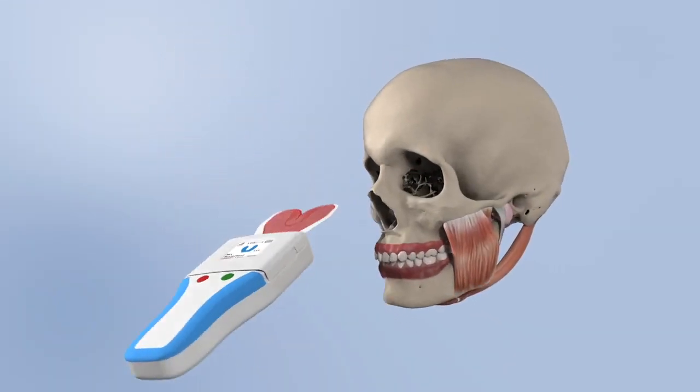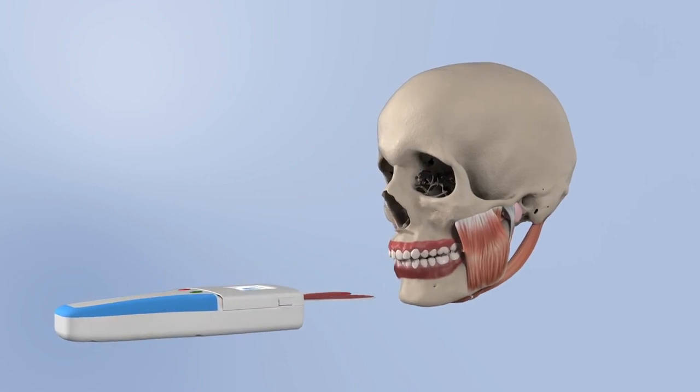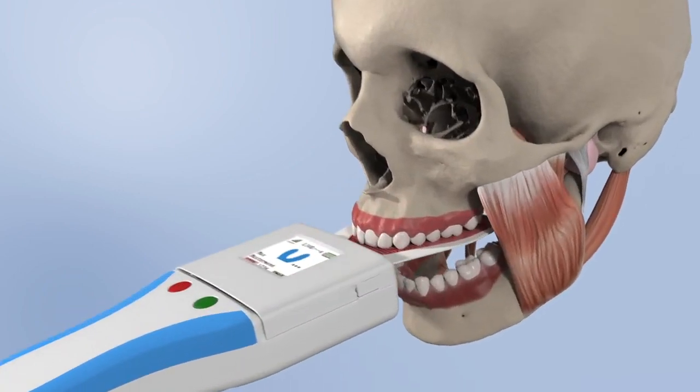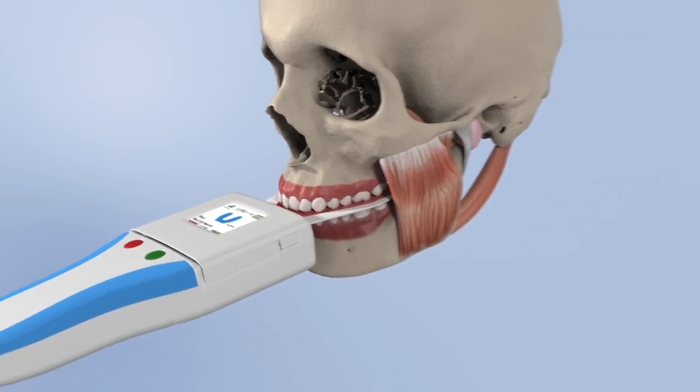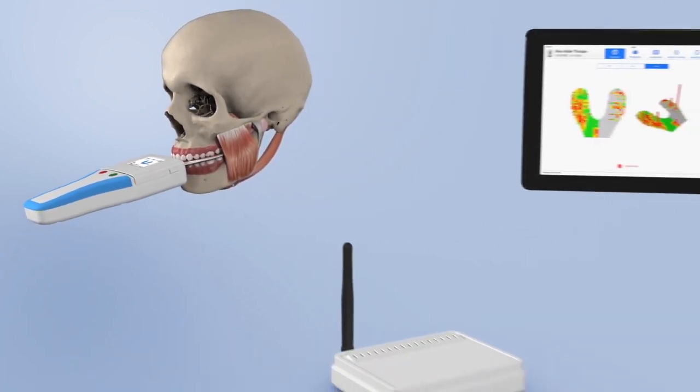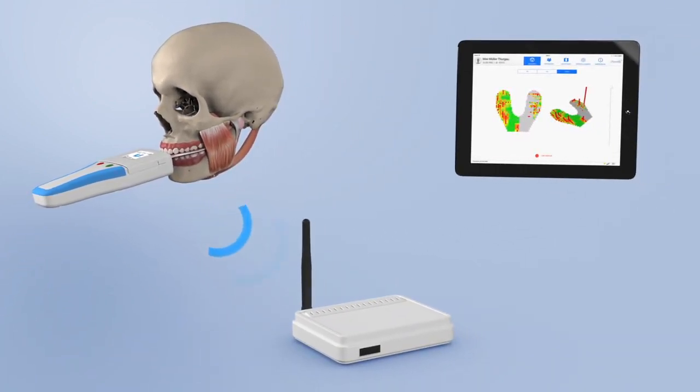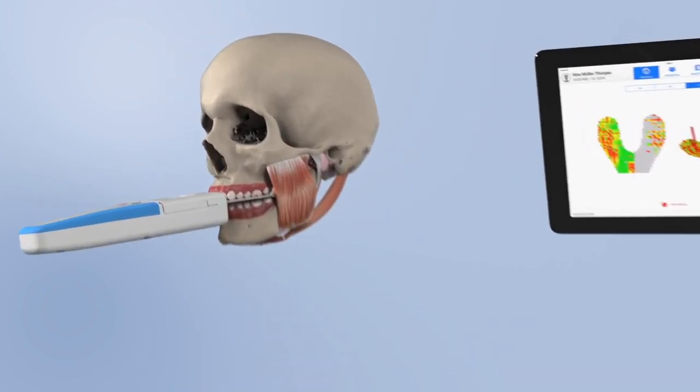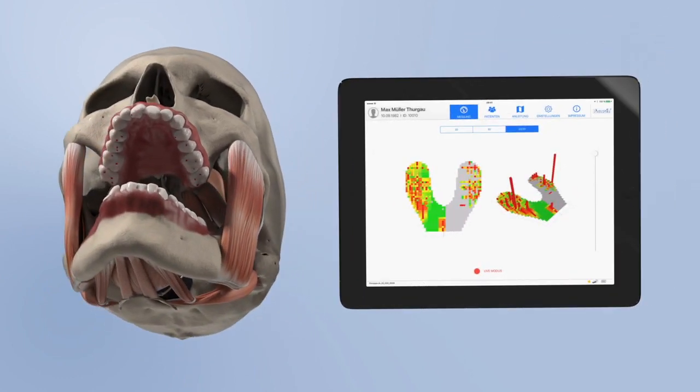The disposable pressure sensor is applied exactly like a conventional occlusion test foil. The patient's masticatory pressure distribution is recorded digitally in 256 pressure levels.